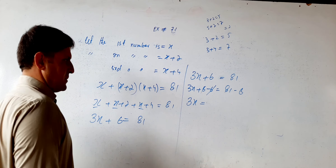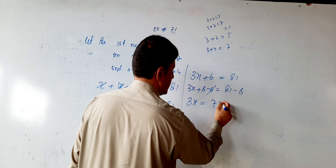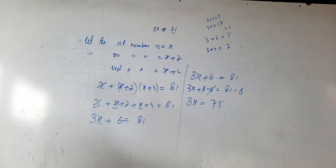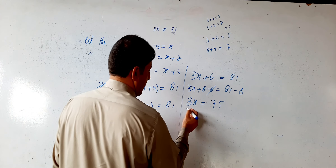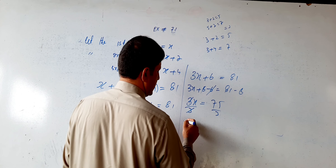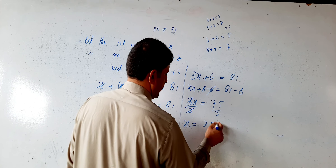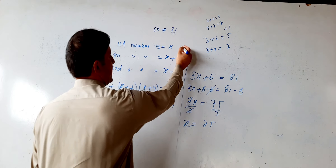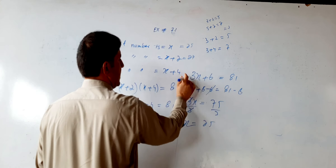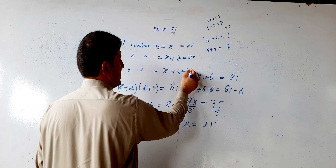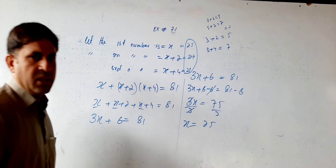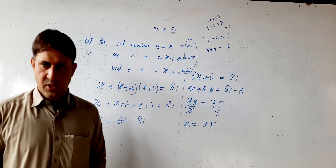Subtract 6 from both sides: 3x = 75. Divide both sides by 3; the threes cancel and x = 25. So the three consecutive odd integers are 25, 27, and 29, and their sum is indeed 81.